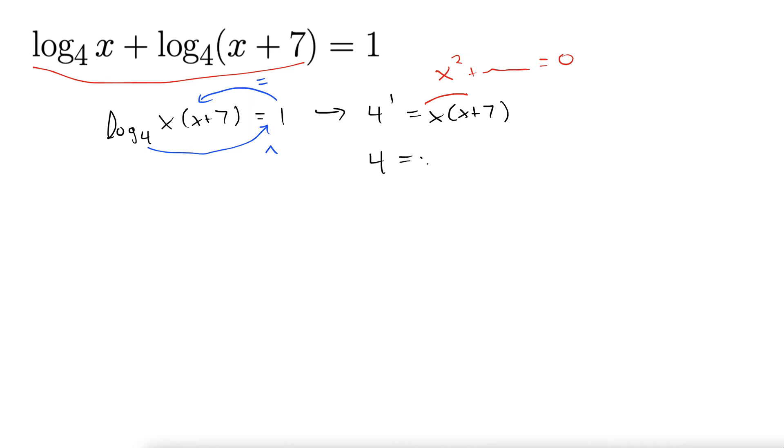So we have 4 equals x squared plus 7x, and subtract the 4 from both sides to get x squared plus 7x minus 4 equals 0.